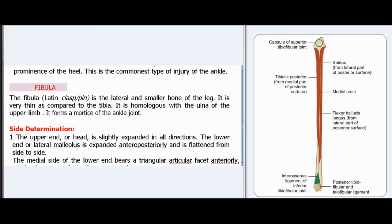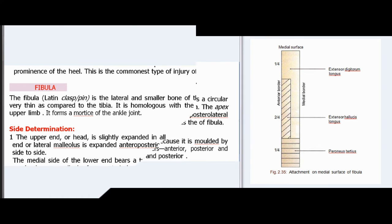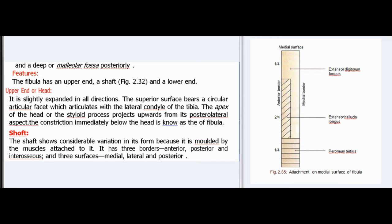The fibula is the lateral and smaller bone of the leg, very thin compared to the tibia. It is homologous with the ulna of the upper limb and forms the mortise of the ankle joint. Side determination: The upper end or head is slightly expanded in all directions. The lower end or lateral malleolus is expanded anteroposteriorly and flattened from side to side; the medial side of the lower end bears a triangular articular facet anteriorly and a deep malleolar fossa posteriorly. The fibula has an upper end, a shaft, and a lower end. The head: its superior surface bears a circular articular facet which articulates with the lateral condyle of the tibia. The apex of the head or styloid process projects upwards from its posterolateral aspect. The constriction immediately below the head is known as the neck of the fibula.